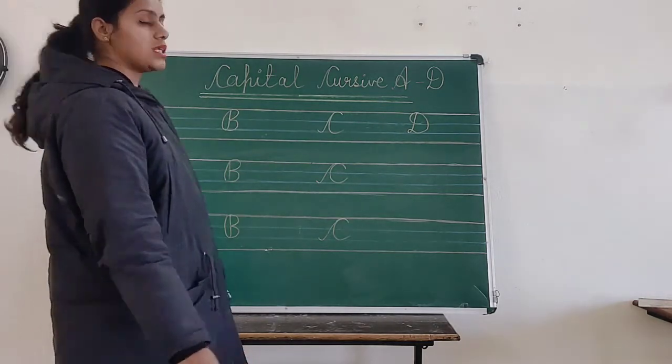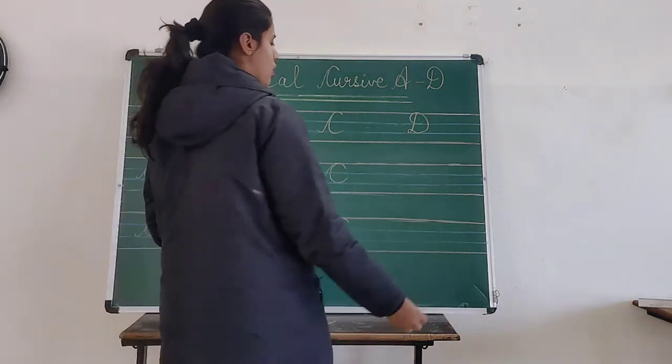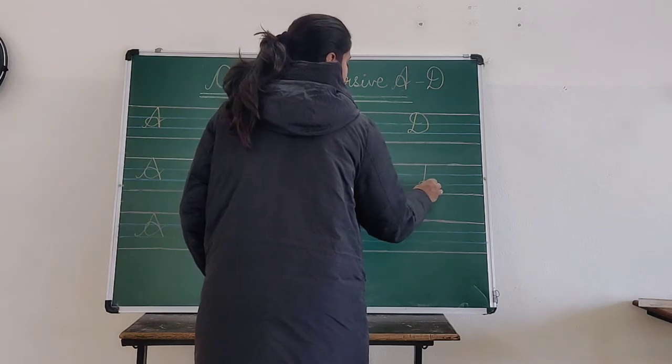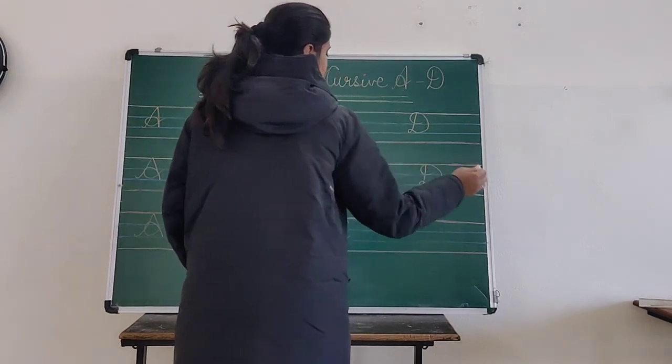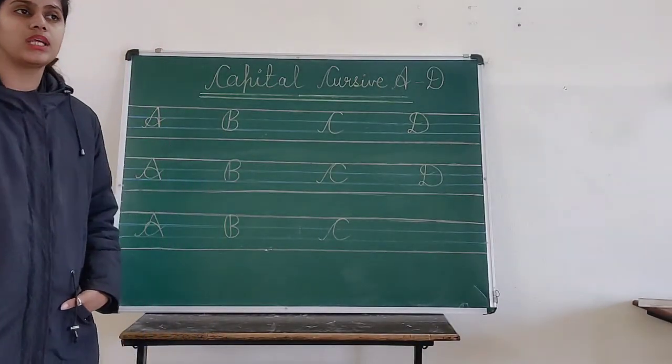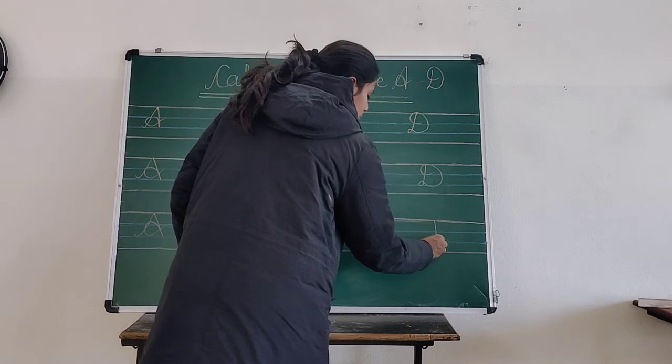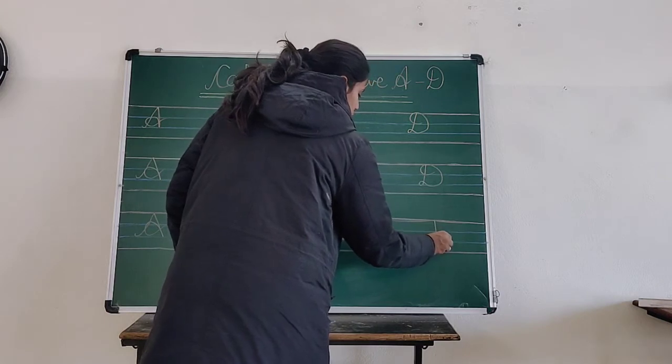C for cat. Now D for dog. One slanted line, make one circle, then go up. And then this is how you have to write D for dog.